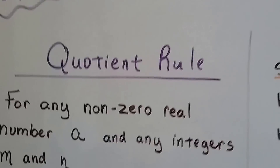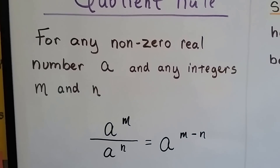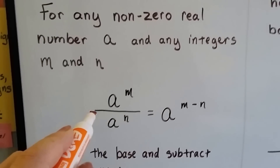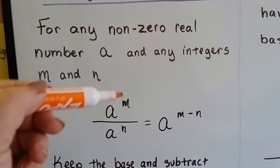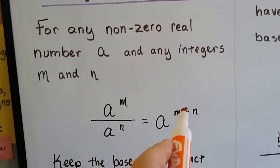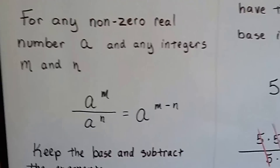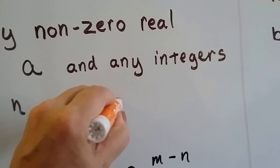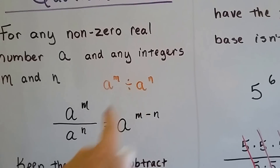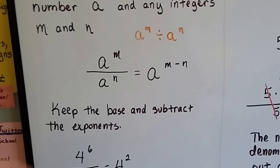The quotient rule: for any non-zero real number 'a' and any integers m and n, if a to the m is over a to the n — remember, fractions are little division problems — it means we're going to subtract n from m. It would be no different if it said a to the m divided by a to the n. Same thing: you subtract the exponents.